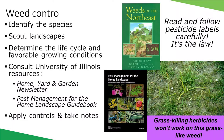Once someone determines they have a problem weed, their next thought is usually: how do I control it? The first step should always be to properly identify the species. This is so important because not all herbicides or weed killers are created to control all weeds equally. Many times poor control results because the wrong type of herbicide was used based on improper species ID.